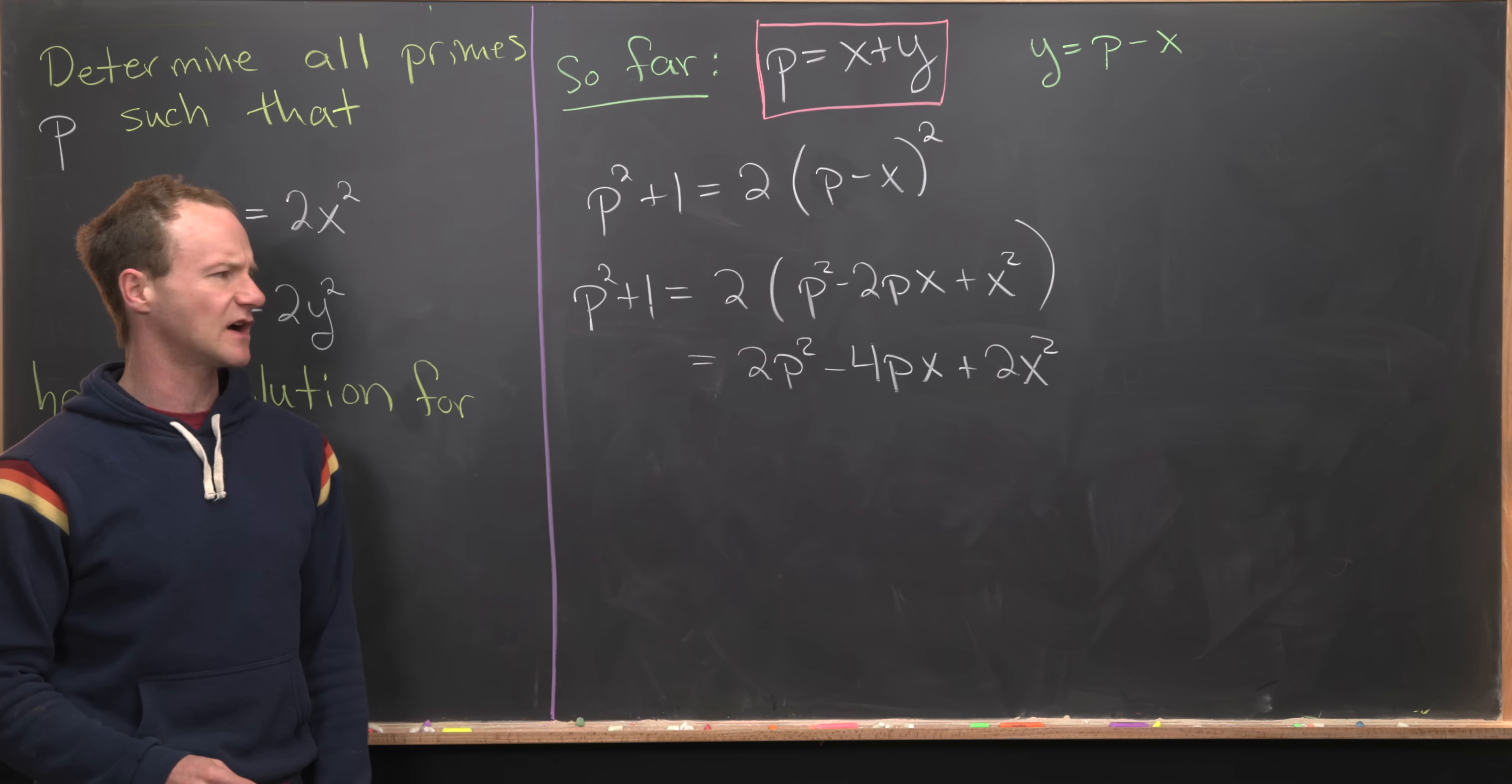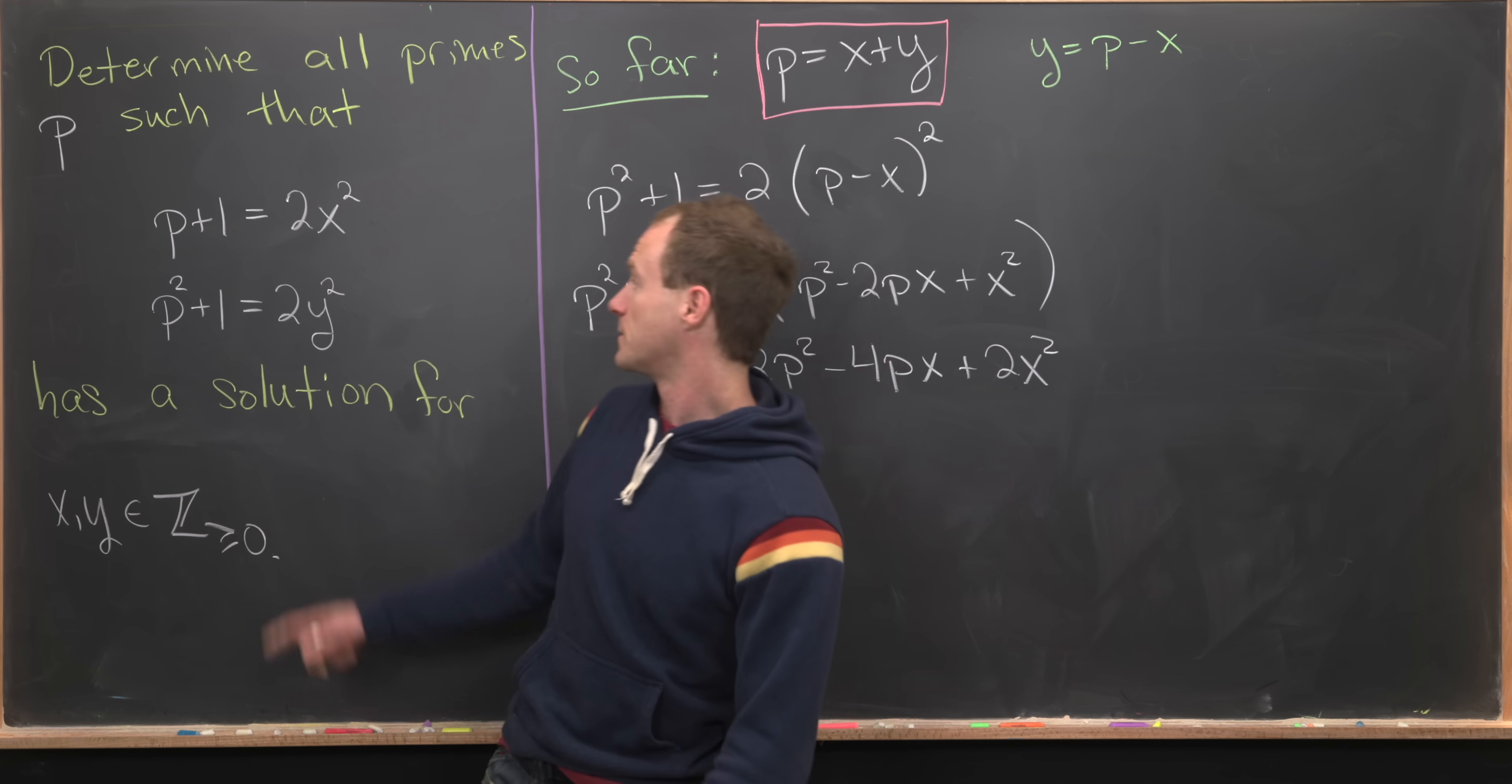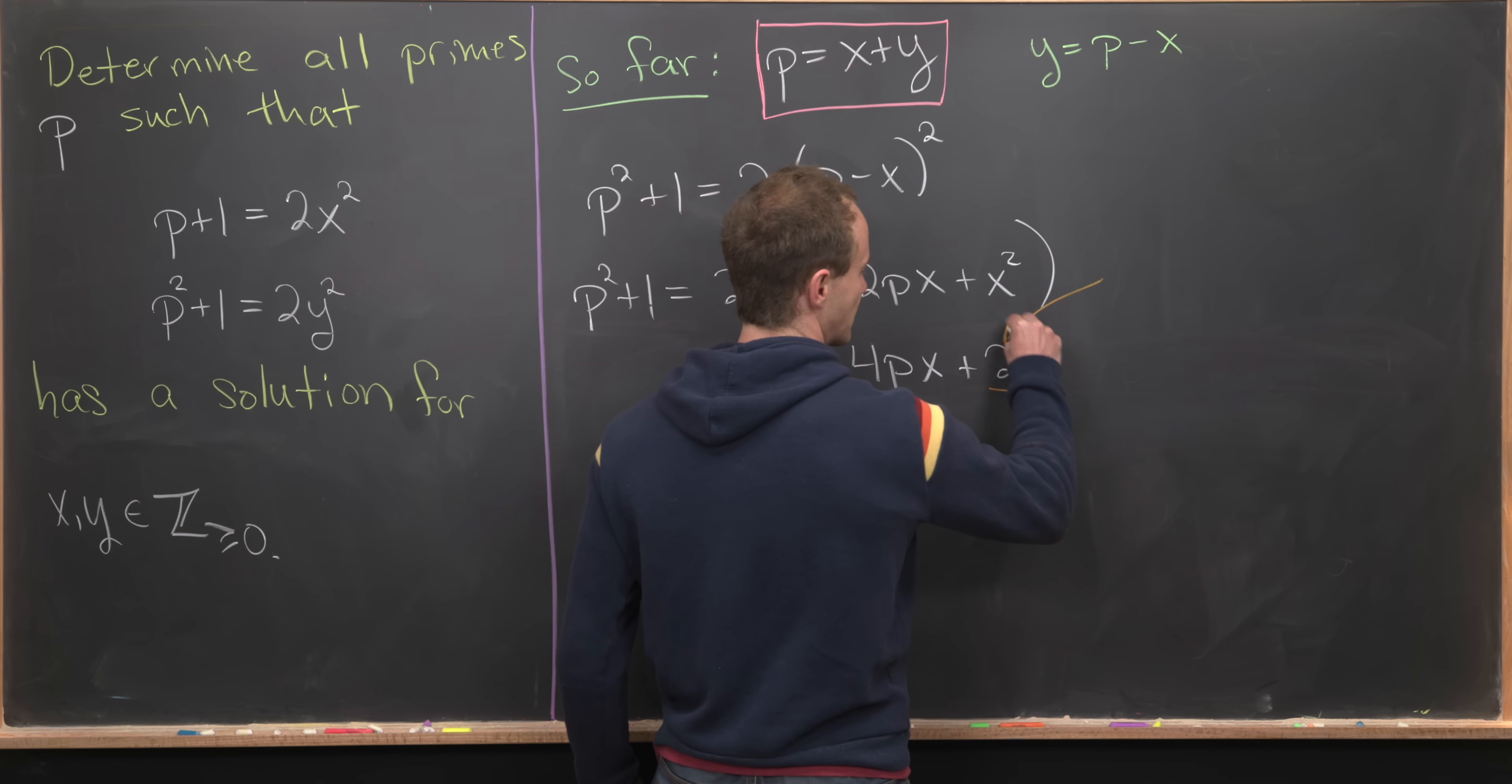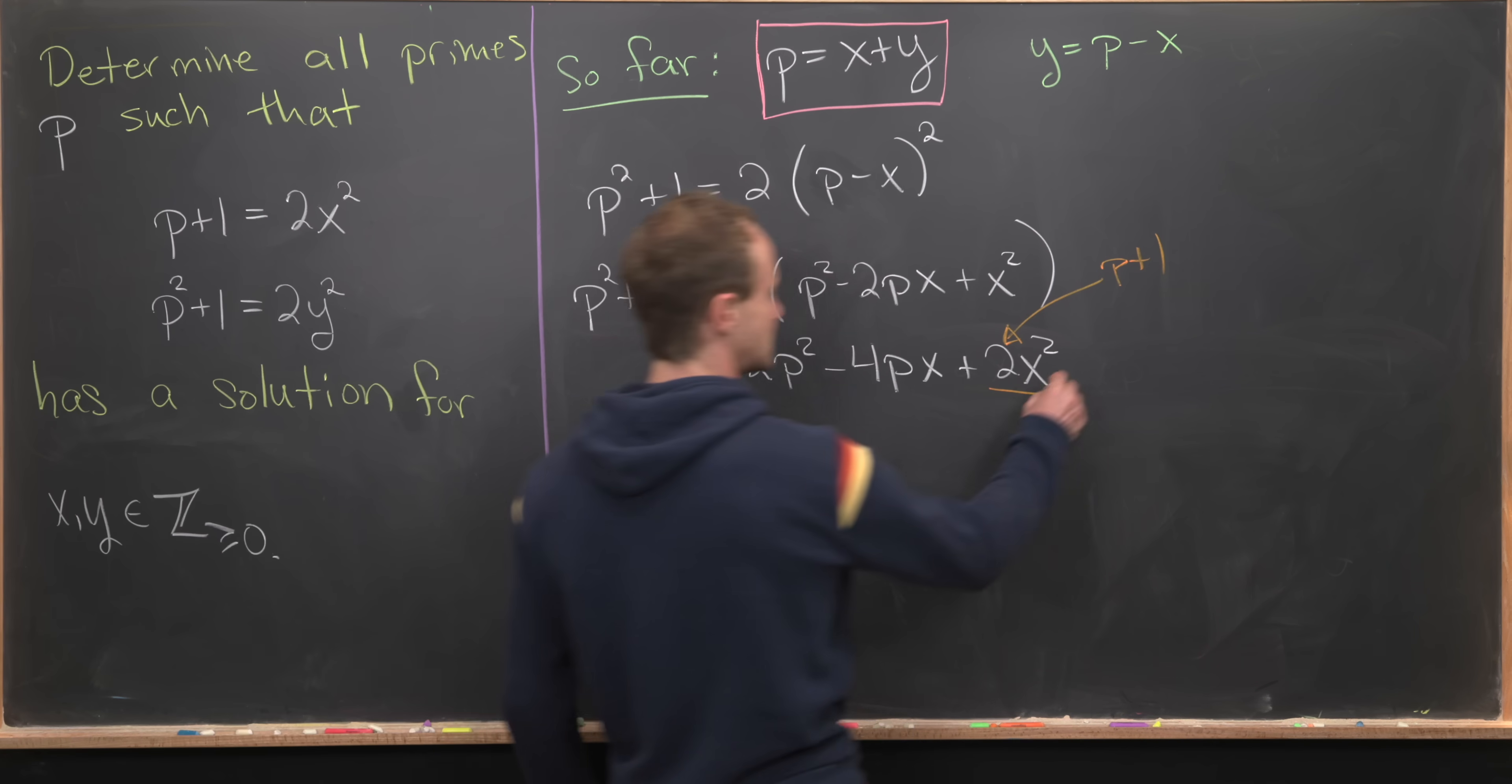It might seem like we've dug ourselves into a hole, but notice we've arrived at something that is given: this value of 2x². We've got a 2x² here, but our first equation told us that 2x² equals p+1. So that's exactly what we'll use. We'll replace 2x² with p+1.